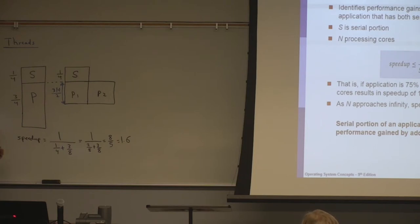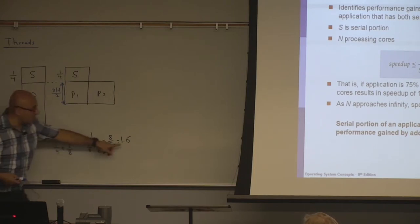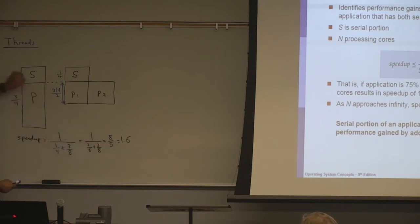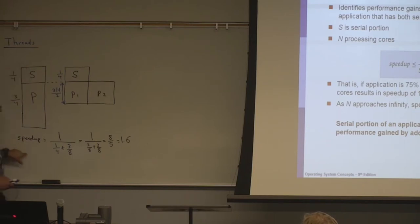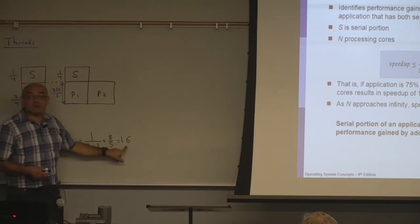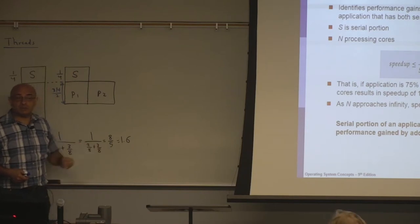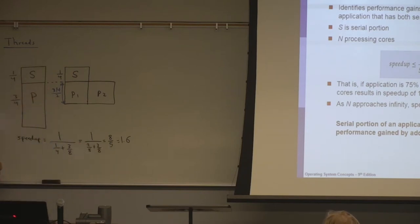So this 1.6 tells me that because I have this sequential part that I could not parallelize, I only parallelized three quarters of the program. My speedup was 1.6, not 2.0.